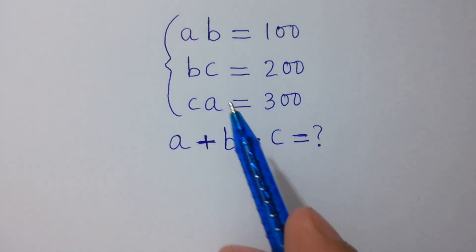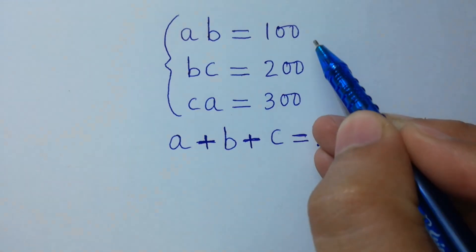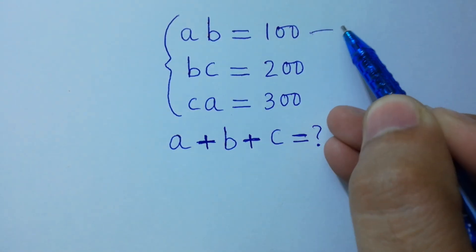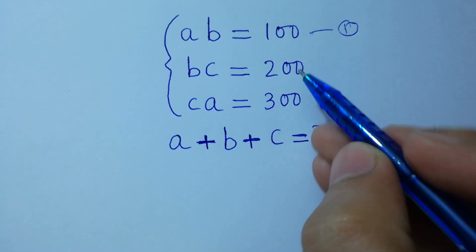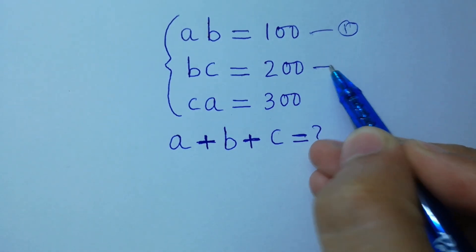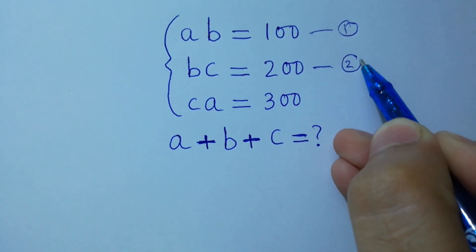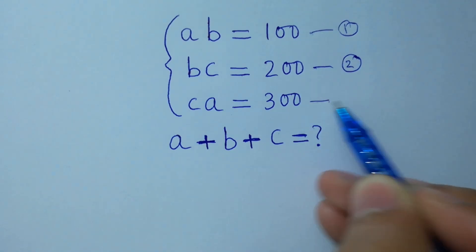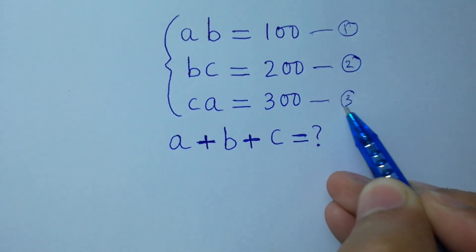Suppose that ab equals 100 is the first equation, bc equals 200 is the second equation, and ca equals 300 is the third equation.